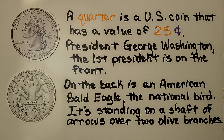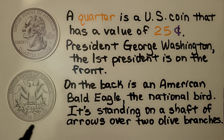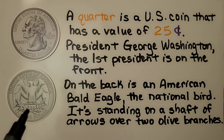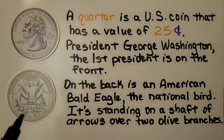President George Washington, the first president, is on the front. And on the back is an American bald eagle, the national bird. It's standing on a shaft of arrows over two olive branches.